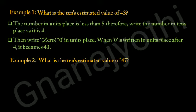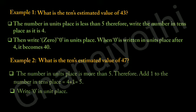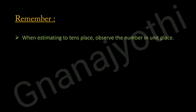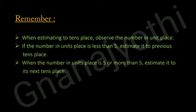Now look at example 2: What is the 10's estimated value of 47? The number in the units place is more than 5. Therefore, add 1 to the number in the 10's place — that is, 4 plus 1 is 5. Write 0 in the units place, so the estimated value of 47 is 50. Remember students: when estimating to the 10's place, observe the units digit. If it is less than 5, estimate to the previous 10's place. If it is 5 or more, estimate to the next 10's place.